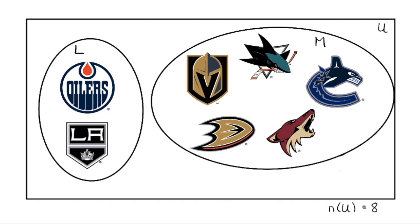That team would be the good old Calgary Flames. I don't love them — they're not even a team that I medium kind of like, but they are part of the universal set representing the Pacific Division. So they go on the outside, in the rectangle, outside of the circles or ovals, and they are what we call the complement. The complement is anything that's part of the universal set but is outside of the subsets that we have defined.